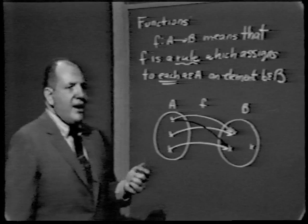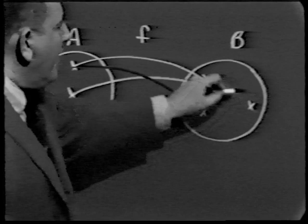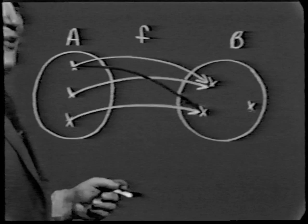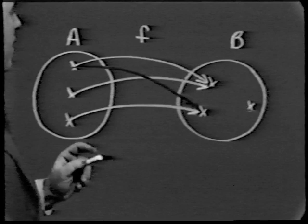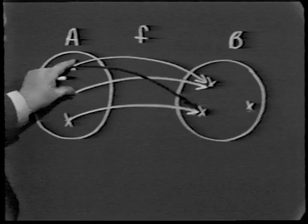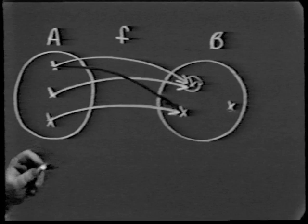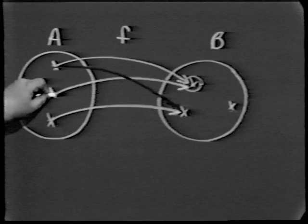Notice that when we say each element of A is assigned to an element of B, two things are implied. First, we do not insist that all of B be used up — there may be surplus elements in B not mapped to by anything in A. Secondly, whereas we prohibit the same element of A from having two different images in B, we do not prohibit one element of B from being the image of two different elements in A.